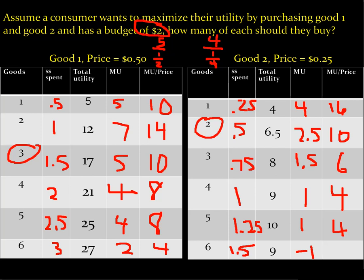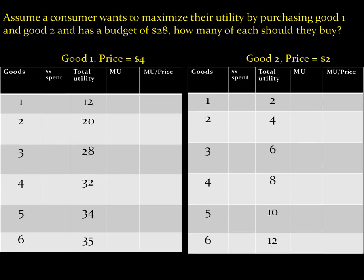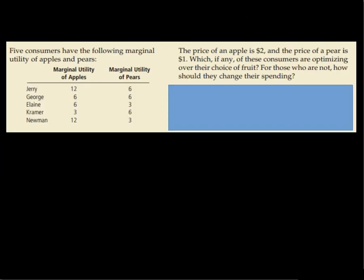That's how to solve it. I'll leave the other two problems in the notes and I encourage you to try them. This next one is a more wordy way of answering this: five consumers have the following marginal utility of apples and pears. When the price of apples is $2 and the price of pears is $1, which of these consumers, if any, are optimizing their choice of fruit?